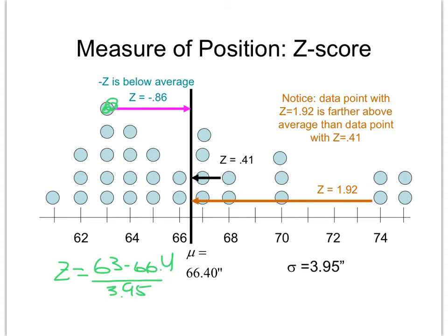The answer is right on the screen, but I want you to see by doing it yourself. When you simplify that, the z-score is going to be negative 0.86.